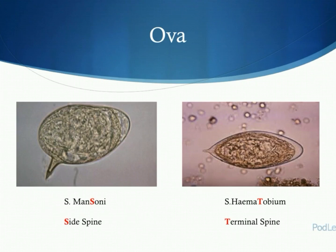Identification of the ova lies in a definitive characteristic: a spine found on the egg. This spine helps to anchor the egg against turbulent blood flow within the blood vessels. In mansoni, the spine is usually found on its side, like a dorsal fin on a fish. Whereas in haematobium, it's a terminal spine and looks like the sting on a bee or a wasp.